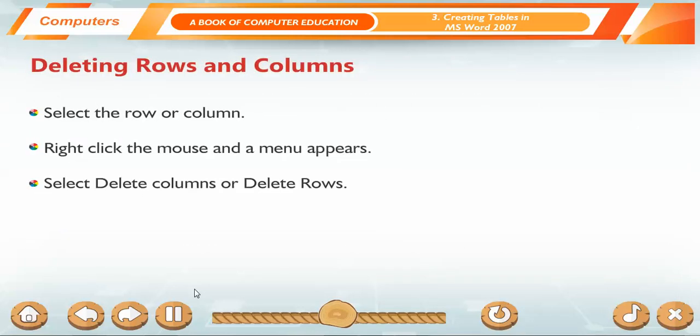Deleting Rows and Columns. Select the row or column. Right-click the mouse and a menu appears. Select Delete Columns or Delete Rows.